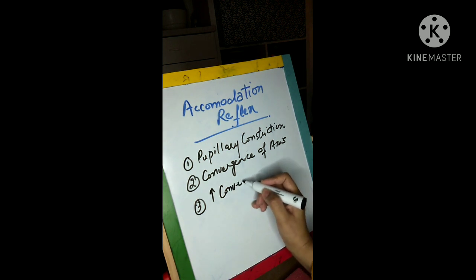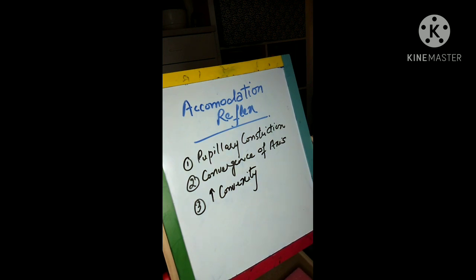There should be increased convexity and refractive pathway. It is something related to the refraction. So when these things happen you can accommodate and you can focus on the object that is near to your eyes. So how does this all happen? I have tried to describe it in a diagrammatic way.